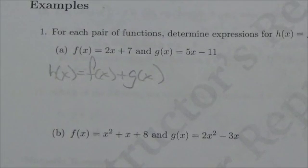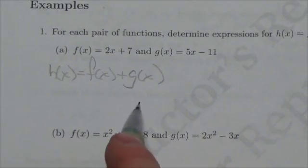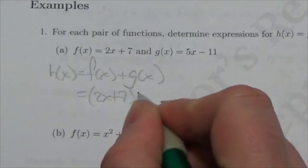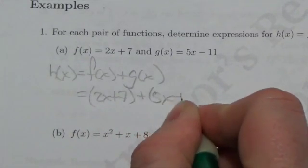The operation between functions is very intuitive. It's basically what you would expect it to be. This would be 2x + 7 plus 5x - 11.